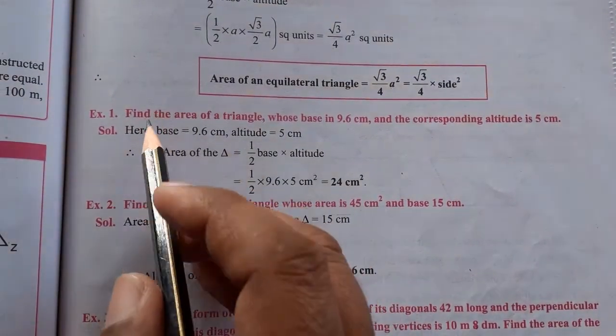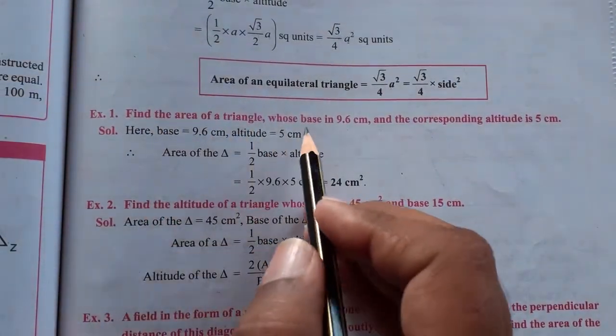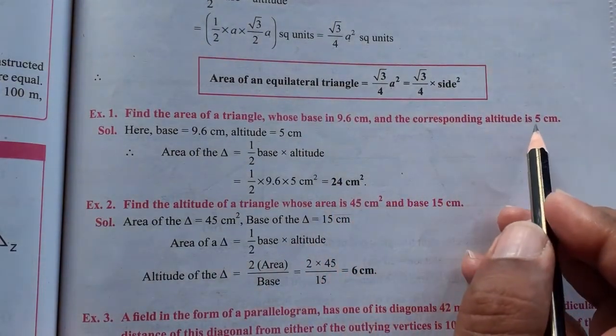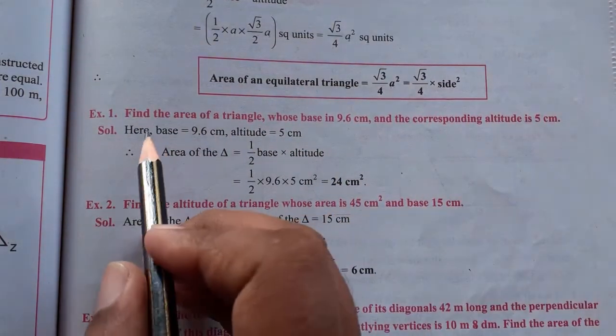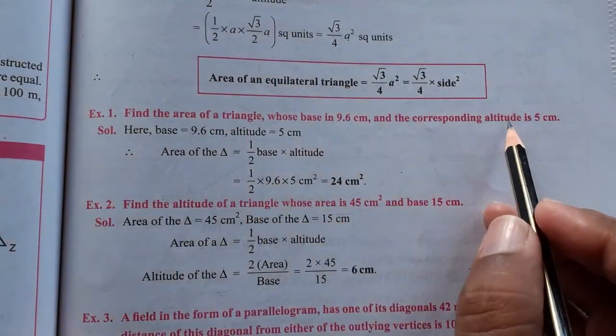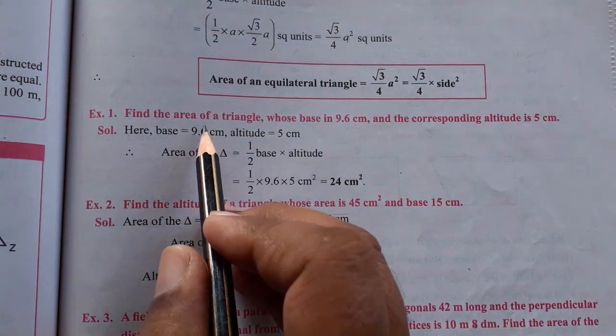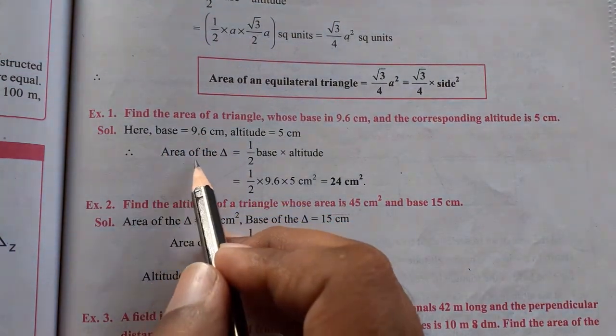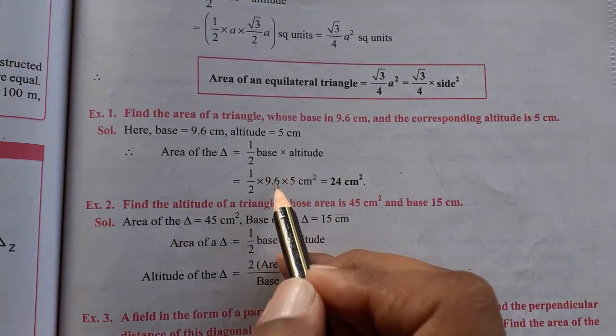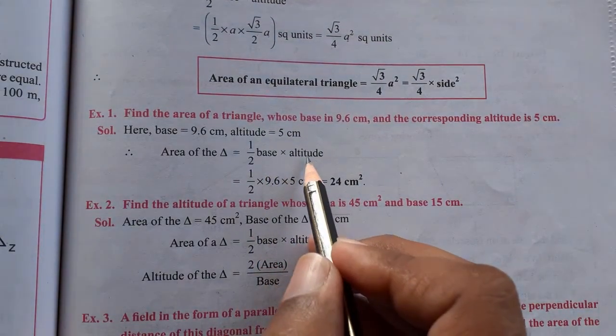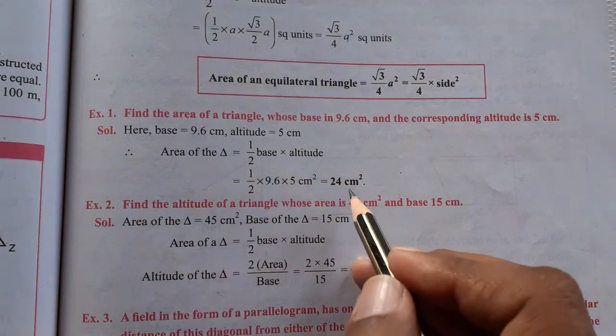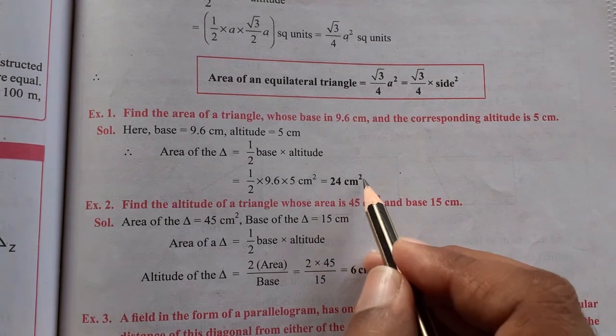So let's see example 1. Find the area of a triangle whose base is 9.6 cm and the corresponding altitude is 5 cm. So we have to find the area of the triangle using base and altitude. We apply the formula, area of triangle is equal to 1 upon 2 into base into altitude. So base value is 9.6 cm and altitude value is 5 cm, so let's multiply this and solve it, so we will get 24 cm square.